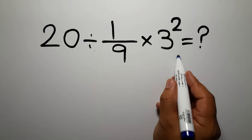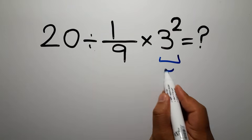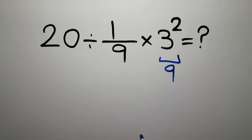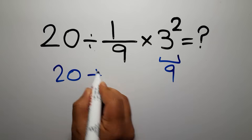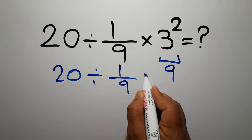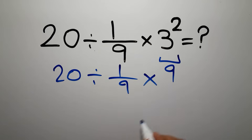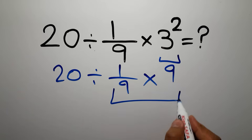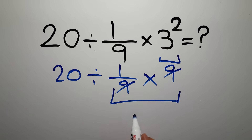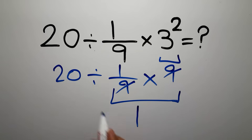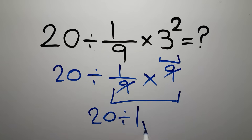3 squared is 9, so we have 20 divided by 1 over 9, then times 9. We can easily cancel this 9 and this 9, so here we have just 1, and 20 divided by 1 which equals just 20.